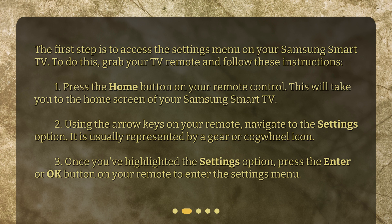Using the arrow keys on your remote, navigate to the settings option. It is usually represented by a gear or cogwheel icon. Once you've highlighted the settings option, press the enter or OK button on your remote to enter the settings menu.